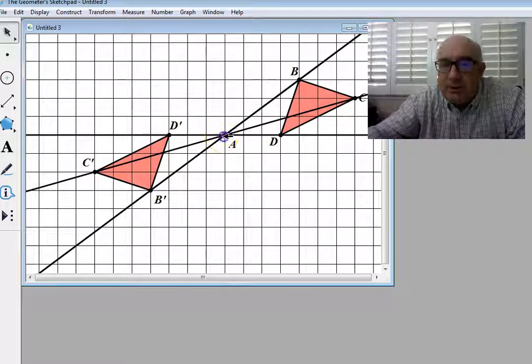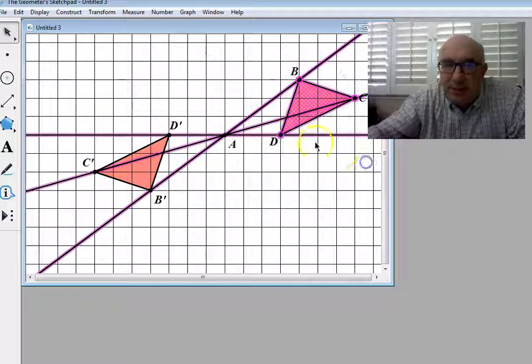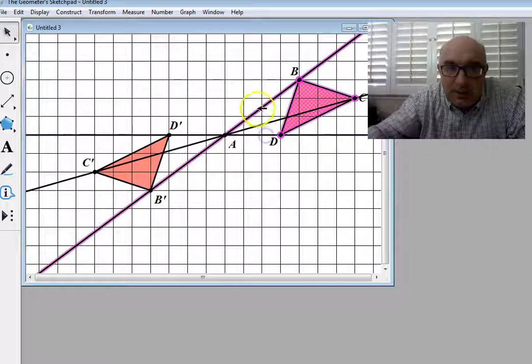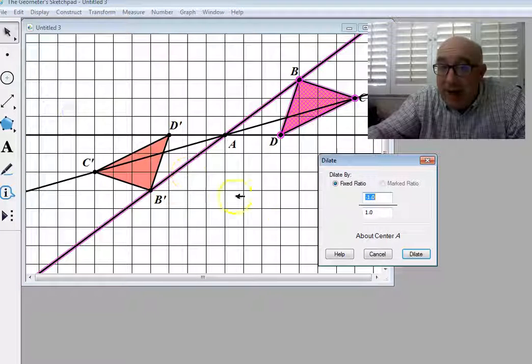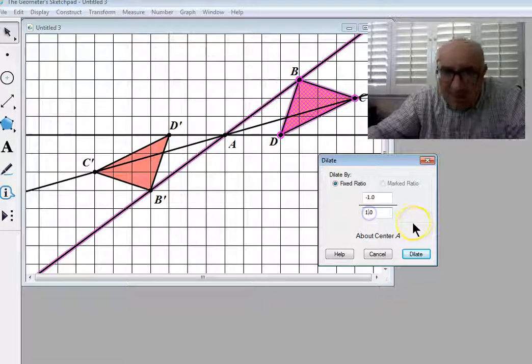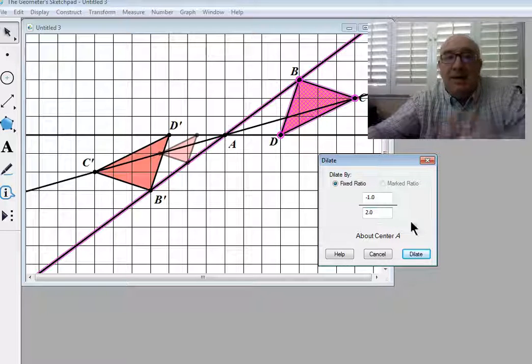Now, if I was to dilate that same triangle again, let's do it another time, but this time let's dilate it by negative 1 half. And there it is.